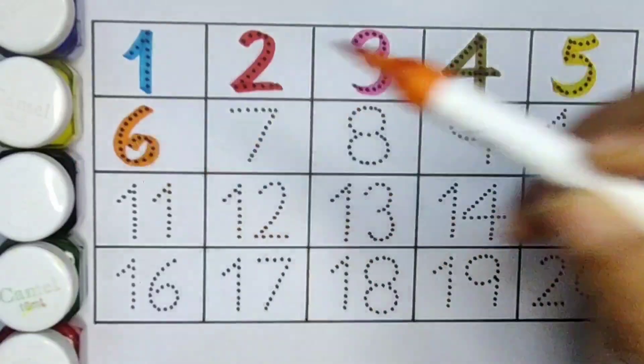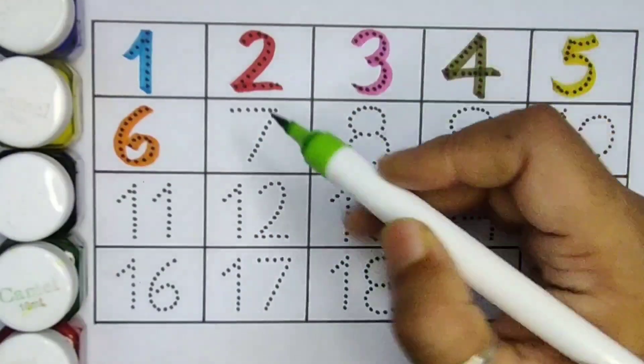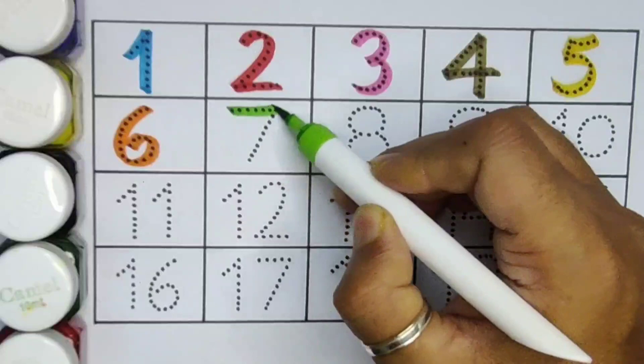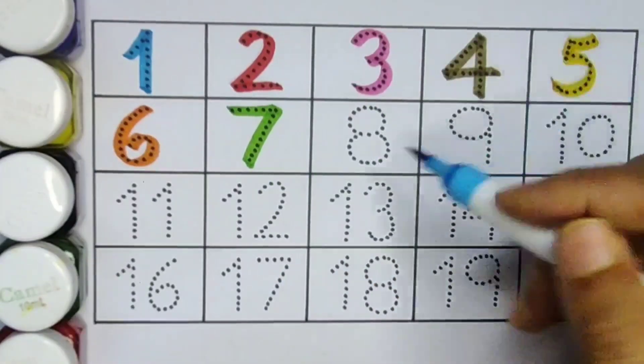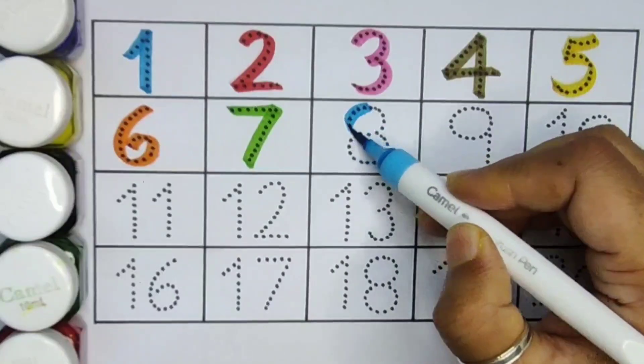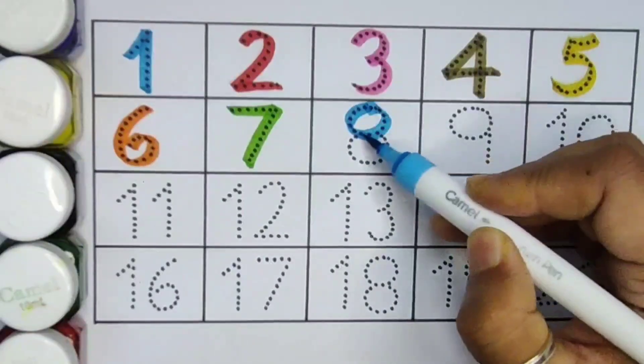Next kids 7. Number 7. Next 8. Number 8.